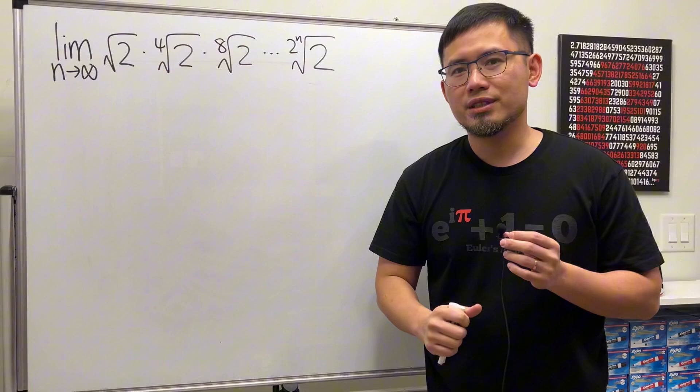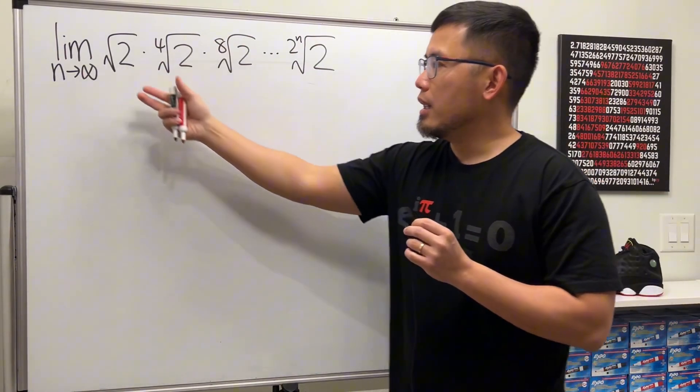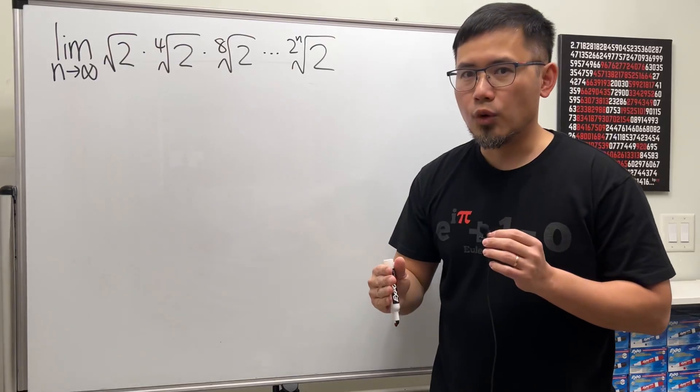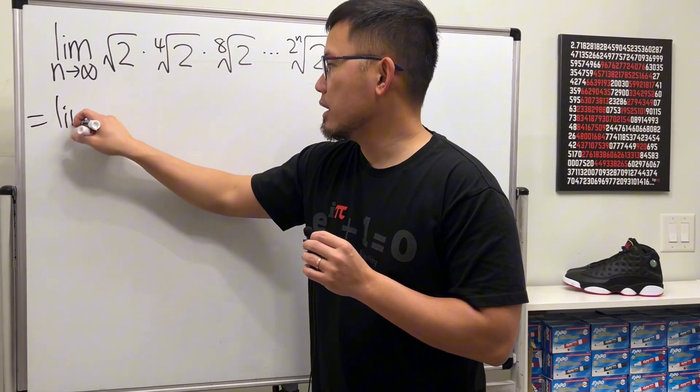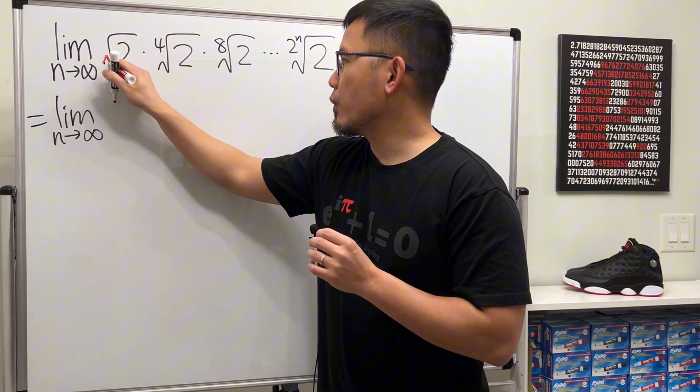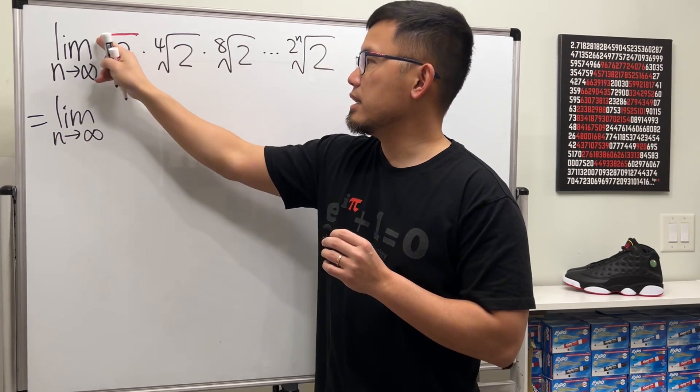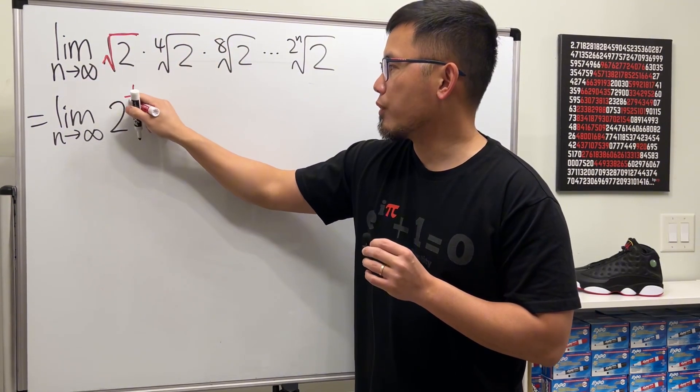Where's the geometric series, right? Well, the key to do this is let's change all the radical forms to exponential forms. So this will be the limit as n goes to infinity. For the square root, technically there's a 2, so we can write this as 2 to the 1 over 2 power.